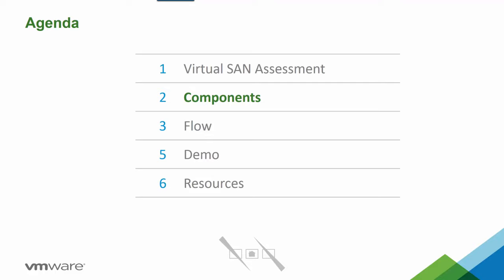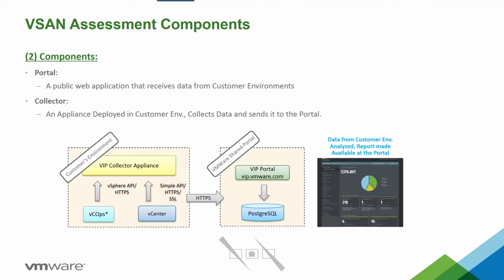Next, let's cover the components. The components of the vSAN assessment tool are very simple — just two primary components. The first is the portal itself, a public web app that receives anonymous data from the customer's environment. The second is the collector, which is a virtual appliance deployed into the customer's environment that sends data to the portal.